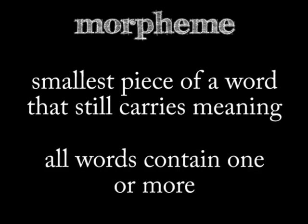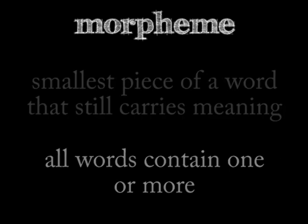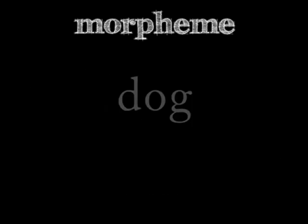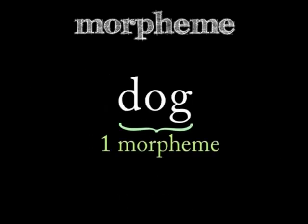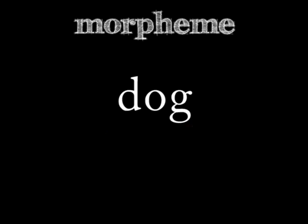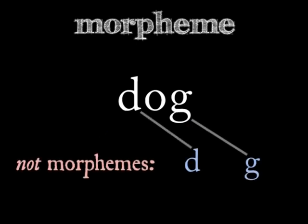Each word has at least one morpheme. For instance, the word 'dog' is both a word and a morpheme — it's the single morpheme 'dog'. If you break it down to just the 'd' sound or the 'g' sound, you're no longer working with morphemes.